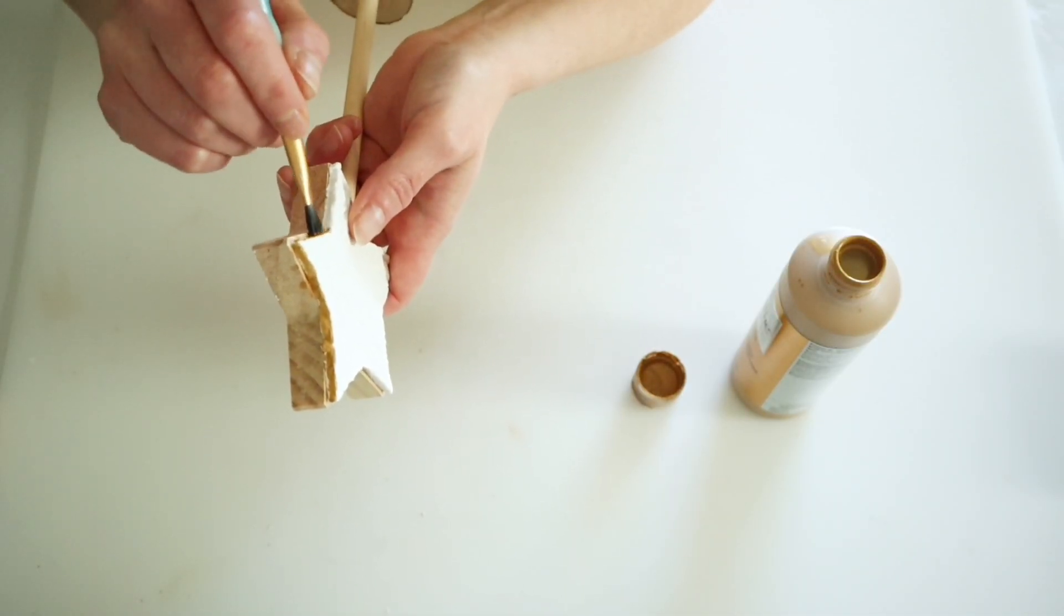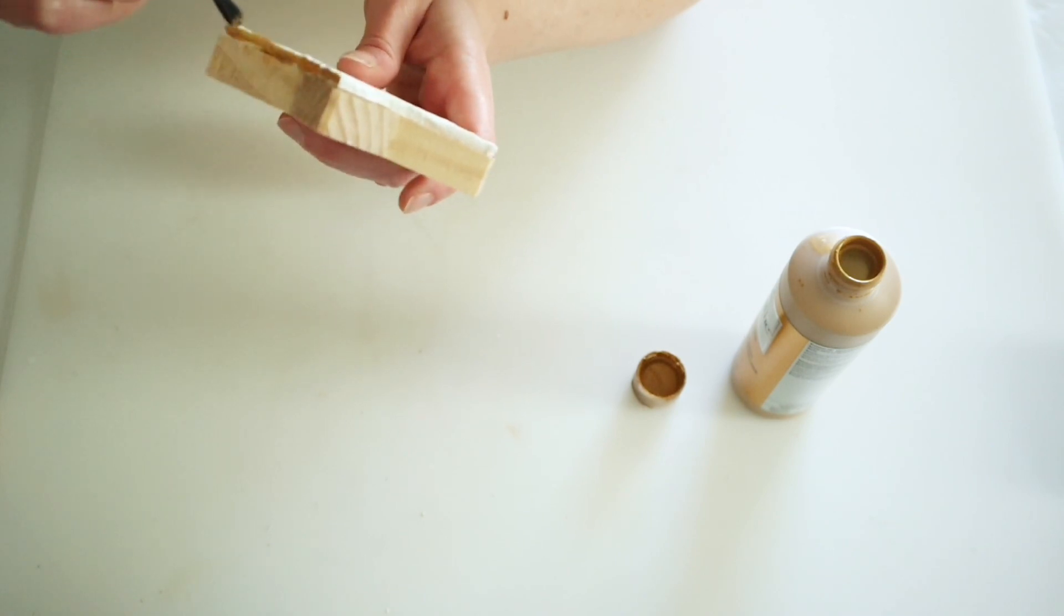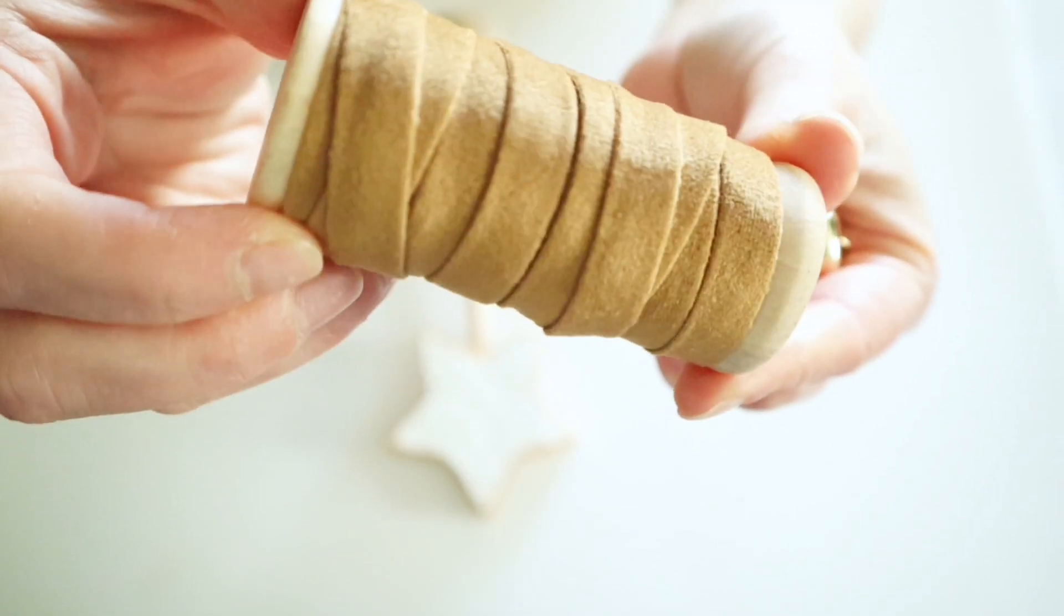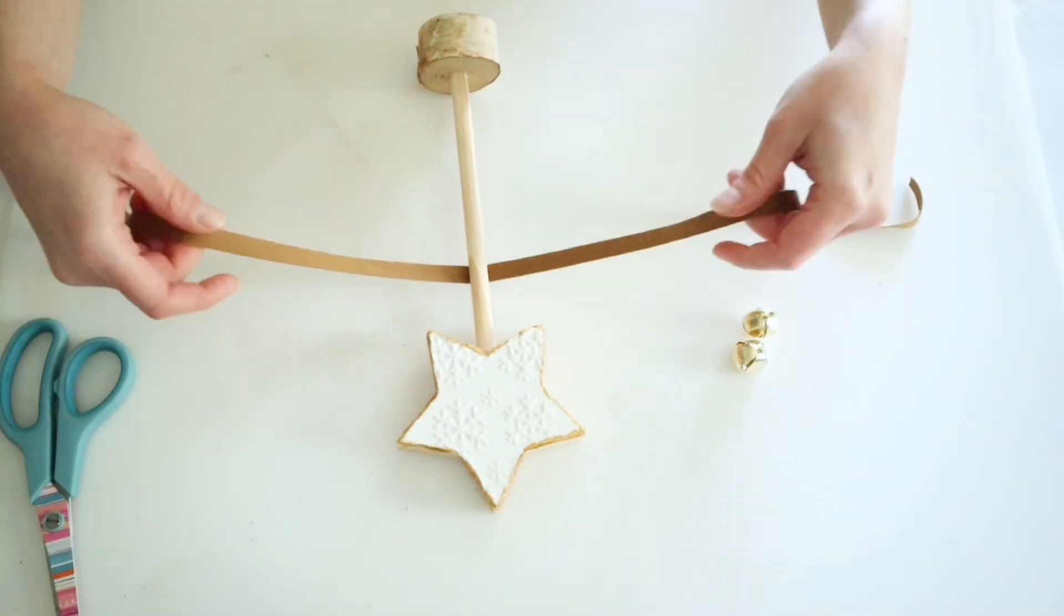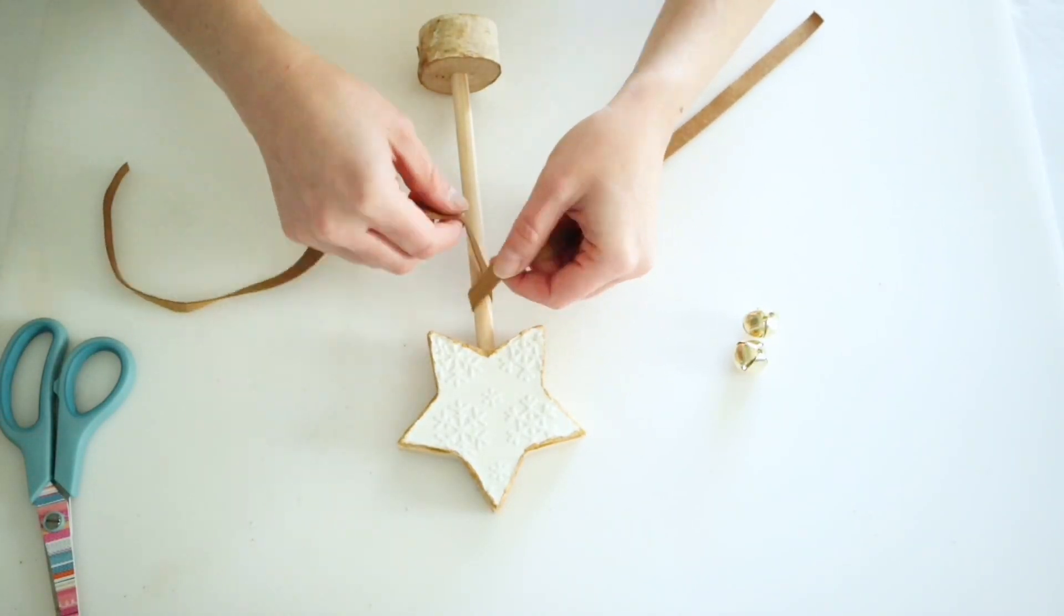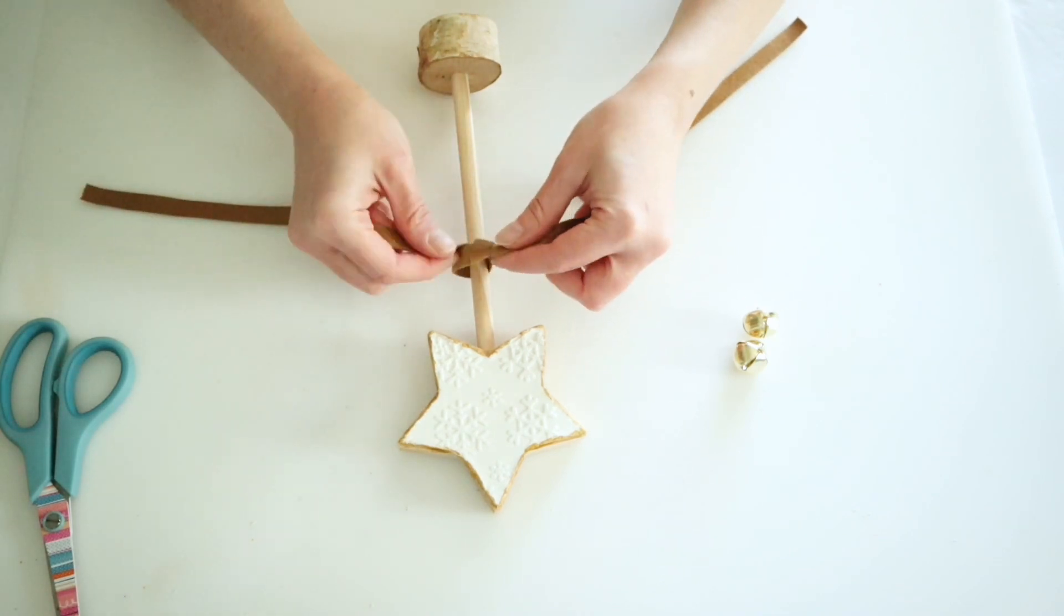I went ahead and added a little wood glue to the hole and placed the dowel down in there. Then I decided to go back in with some of my antique gold paint and just highlight the edges of this star and then finally I'm going to be using this beautiful gold velvet ribbon that I got from Amazon and I'm just going to tie a messy bow around this.